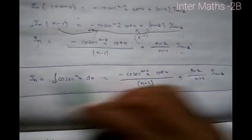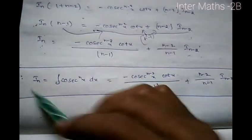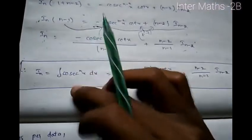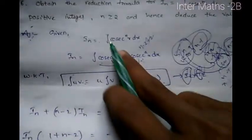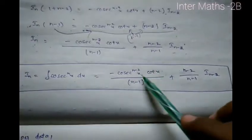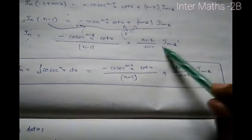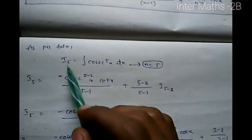So this is the reduction formula. I suffix n, which is integration of cosine^n x into dx, equals cos^(n-2) x into cos x by n-1, plus n-2 by n-1 into I suffix n-2. This is the reduction formula derived.